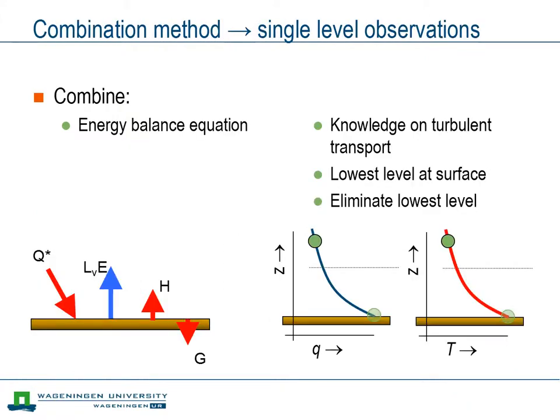Whereas the Bowen ratio requires observations at two levels in the atmosphere, there is also a class of combination methods that need observations at only one height. However, those methods come with additional complexities.